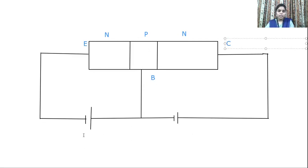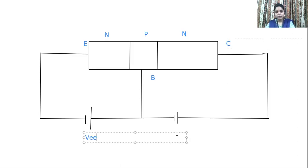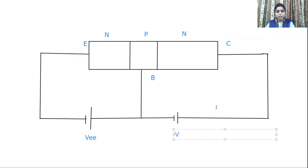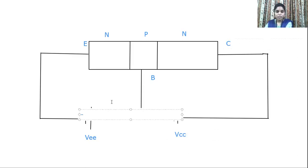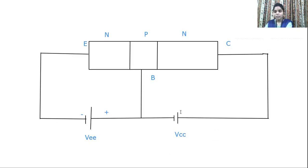We can see the supply VEE given to the emitter and VCC for the collector. The negative terminal of VEE is at the emitter and positive at the base. For VCC, positive is at the collector and negative is at the base.